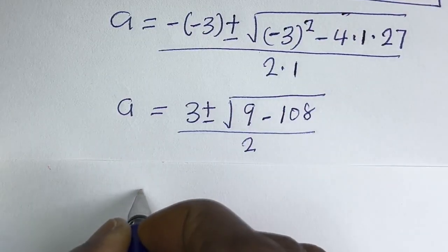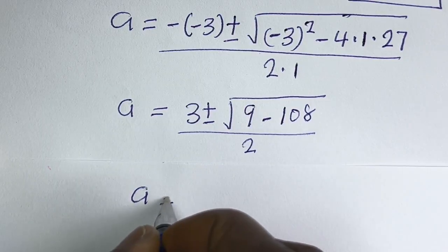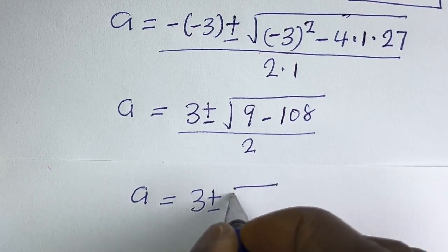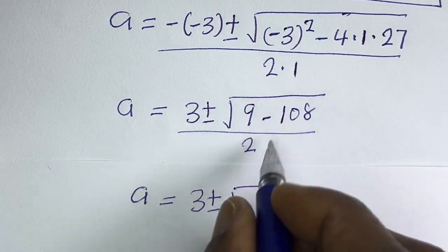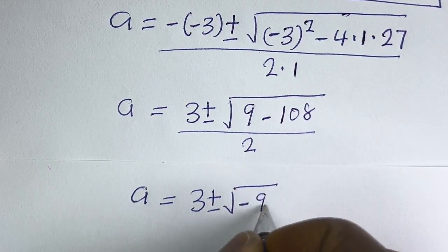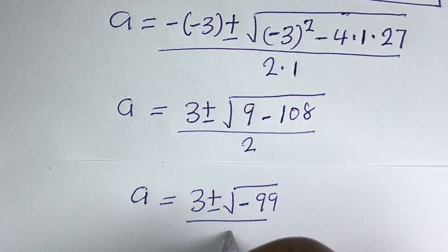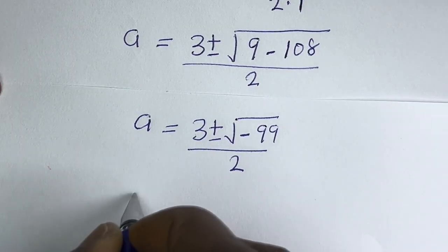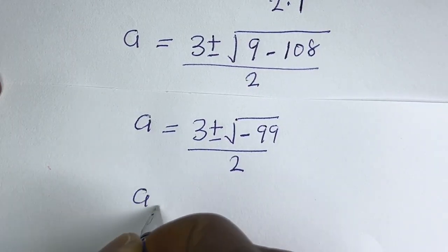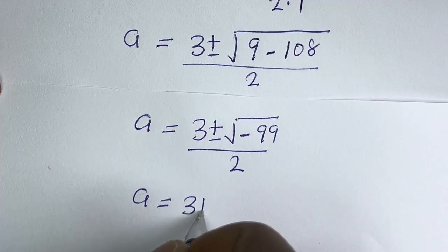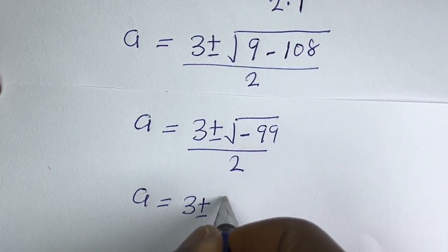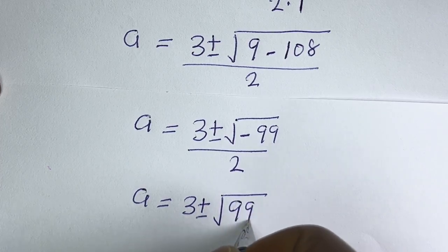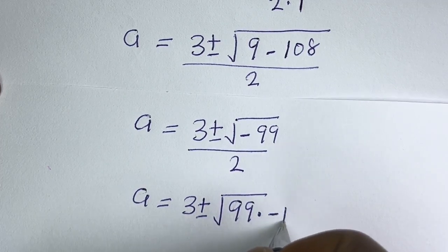From here, a is equal to 3 plus or minus square root of 9 minus 108. This is minus 99, divided by 2. A is equal to 3 plus or minus square root of 99 multiplied by minus 1, everything divided by 2.